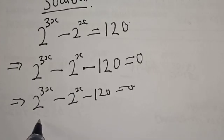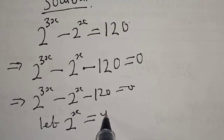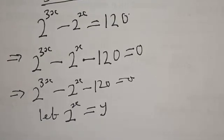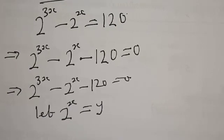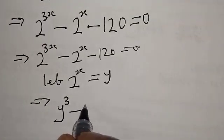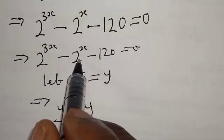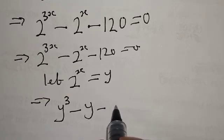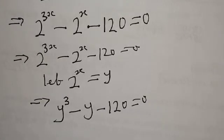Now let's substitute. We let 2 raised to power x equal to y. So anywhere you see 2 raised to power x, you put y there. This implies that we have y raised to power 3 minus y minus 120 is equal to 0.